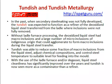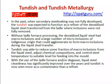In the past, when the secondary steelmaking process was not fully developed, the tundish was expected to function as a refiner of the deoxidized liquid steel transferred from the ladle, where inclusions were not fully removed. Without ladle furnace processing, the deoxidized liquid steel had macro-inclusions and a large number of micro-inclusions of indigenous origin that could agglomerate to form macro-inclusions during the liquid steel transfer. Tundish was able to reduce some fraction of these inclusions from the liquid steel, and could adjust chemical composition and control steel temperature to a suitable level for casting into the mold.